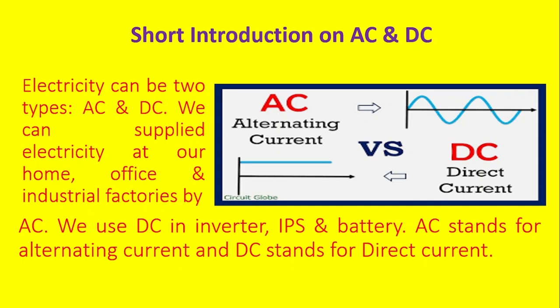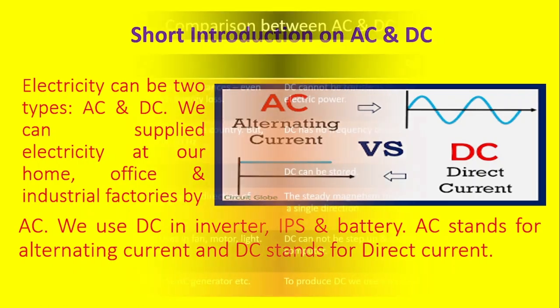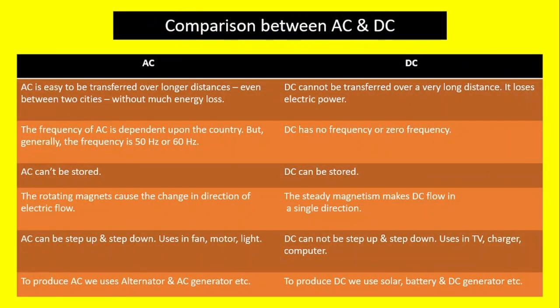We use DC in inverters, IPS, and batteries. AC stands for alternating current and DC stands for direct current. In the comparison between AC and DC, AC is easy to transport over longer distances, even between two cities, without mass energy loss.